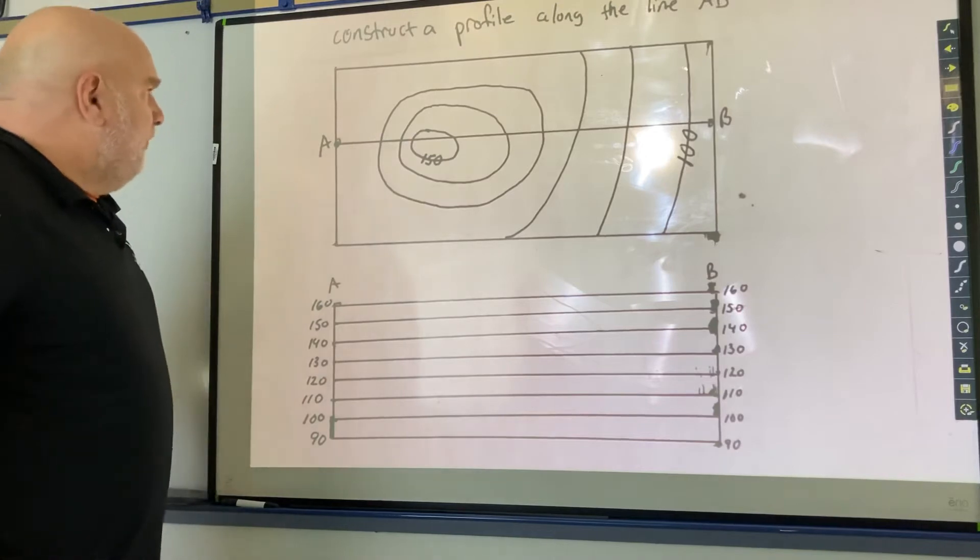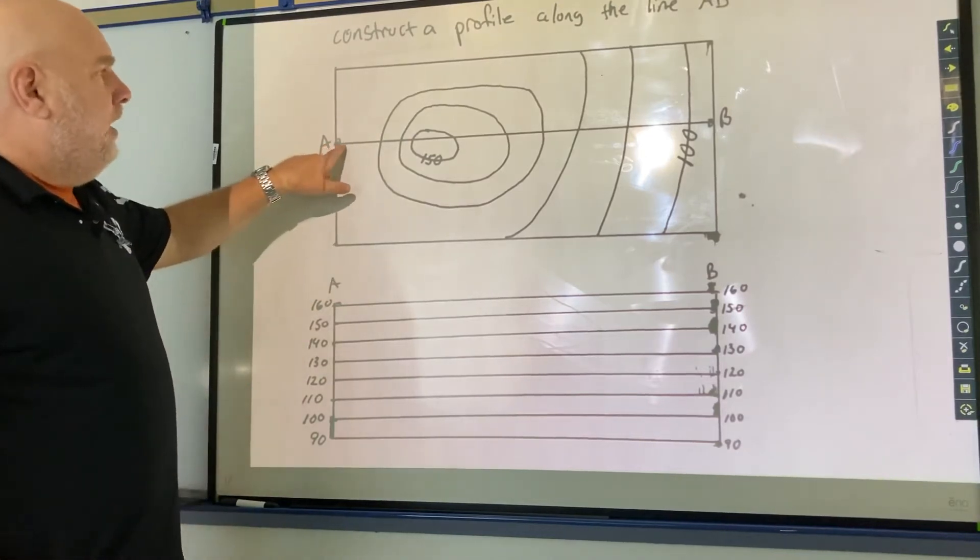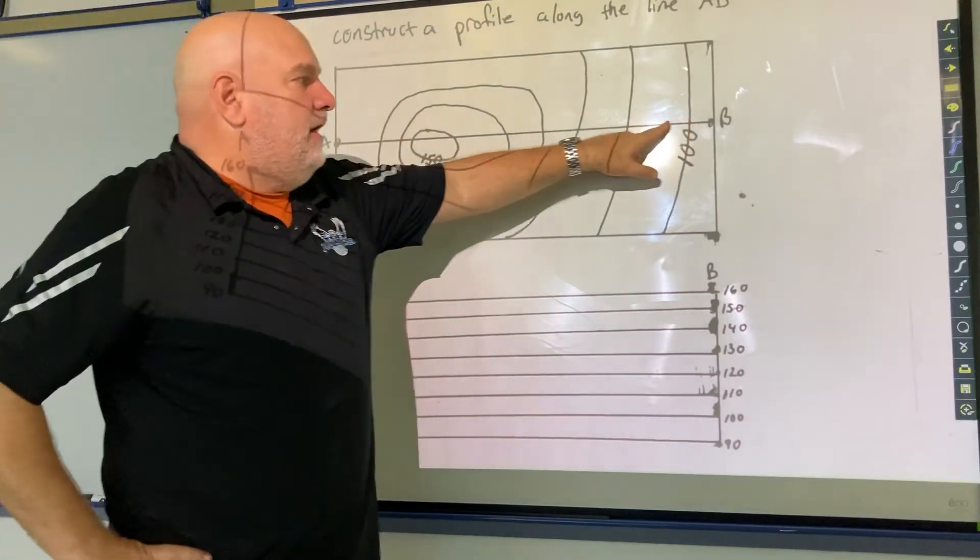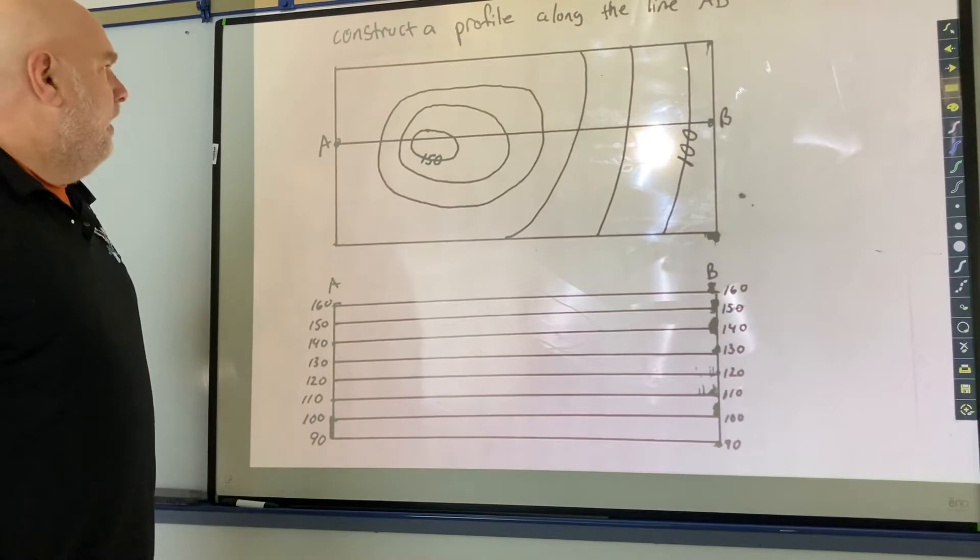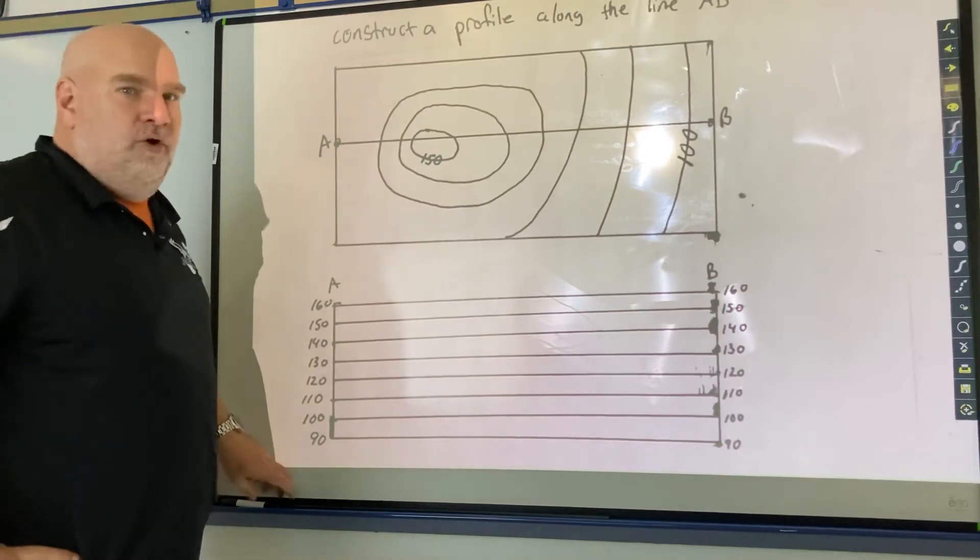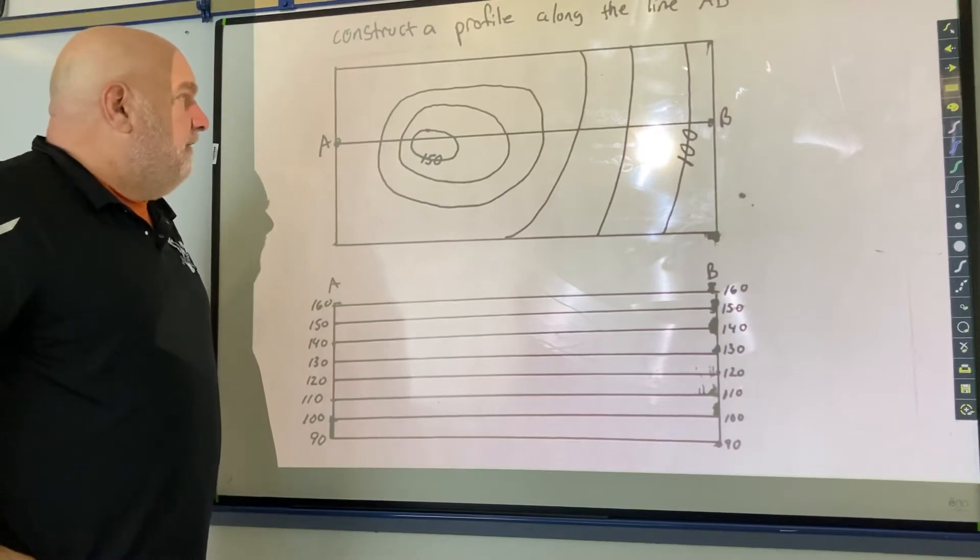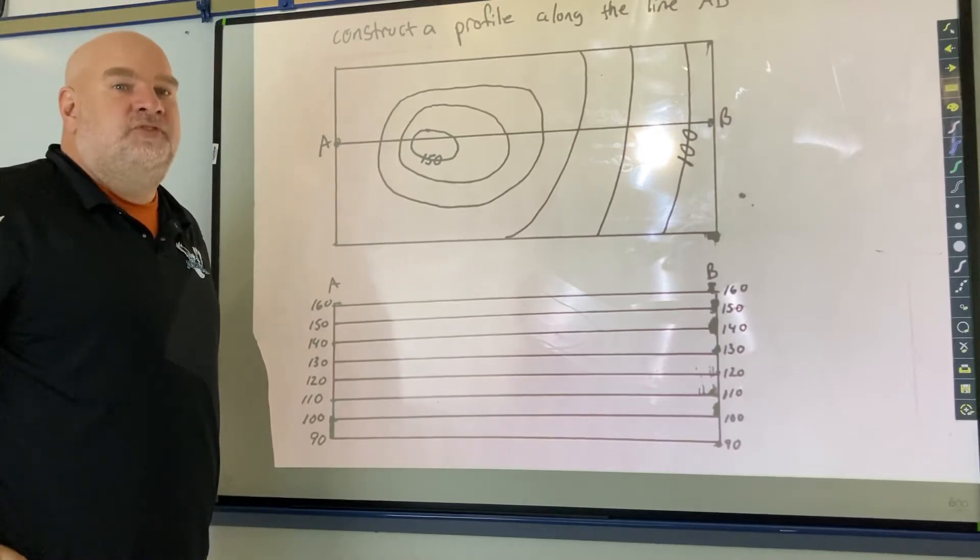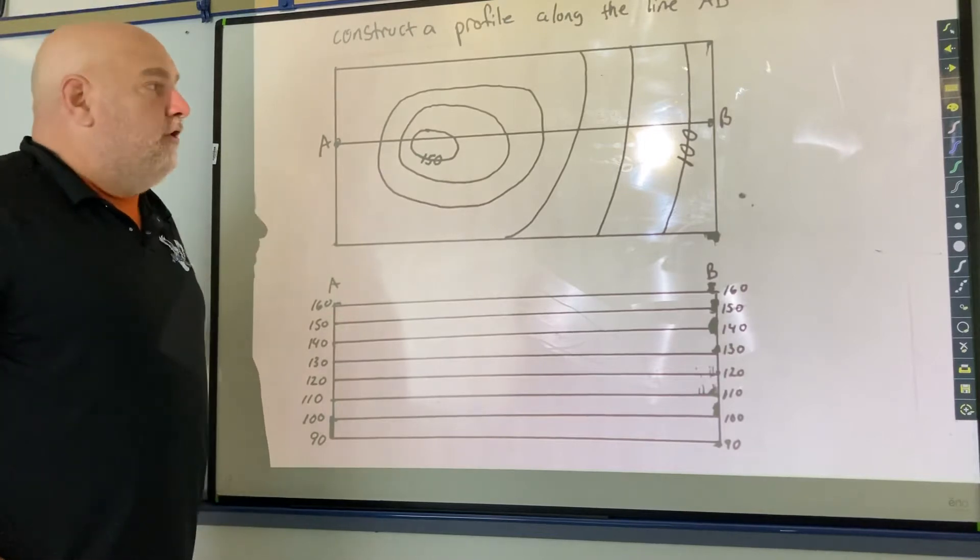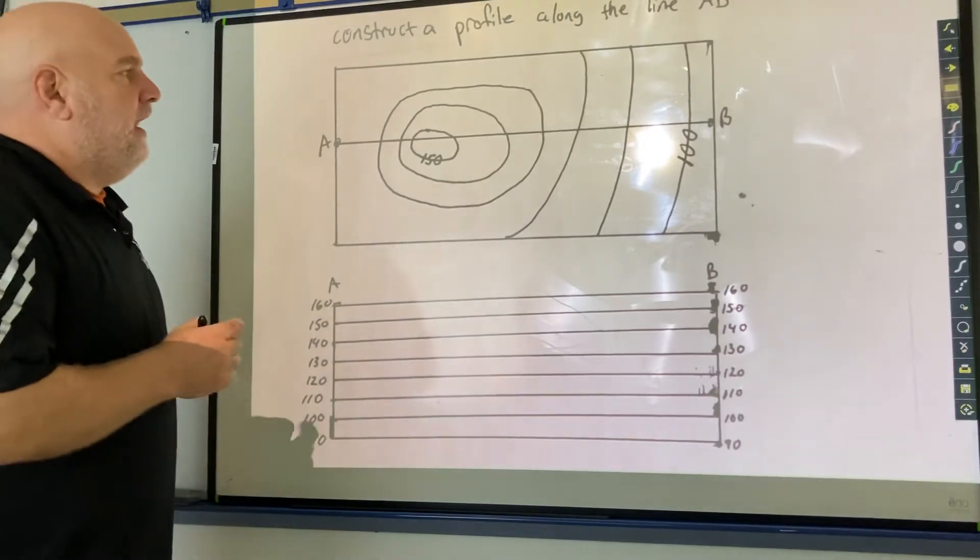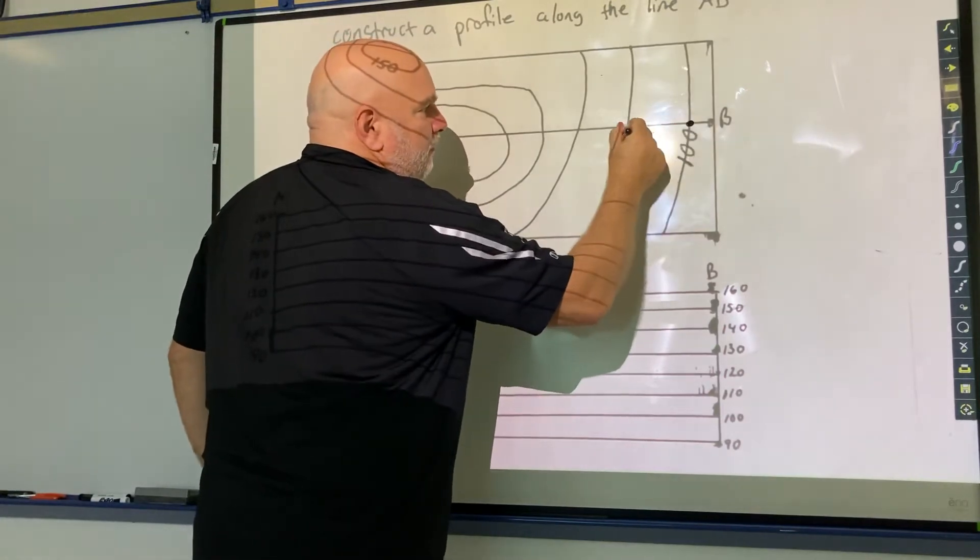Now, let's say I want to construct a profile along this line AB. So I want to see what the shape of the land looks like from a side view along that line AB. This is how I go about doing that. First off, what I'm concerned about if I'm constructing a profile along an AB line is any spot where a contour line crosses line AB. So those points right there are what I am concerned about.